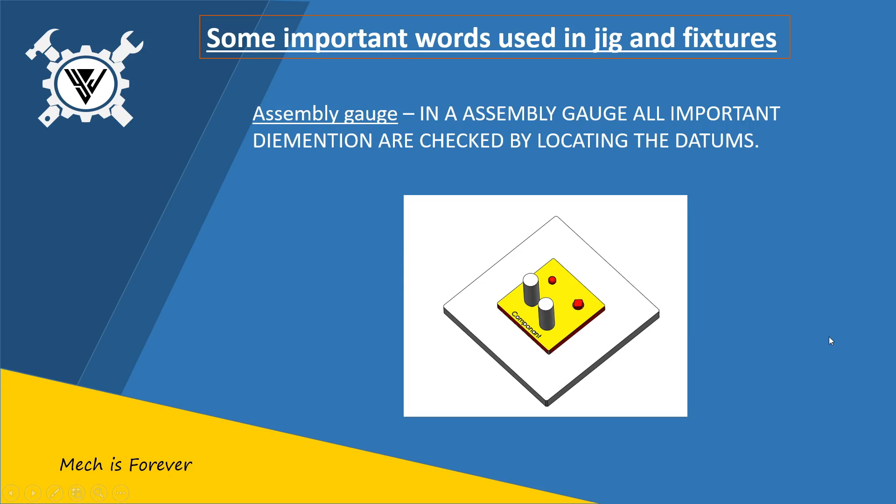Assembly gauge. In assembly gauge, all the important dimensions are checked by locating the datums.